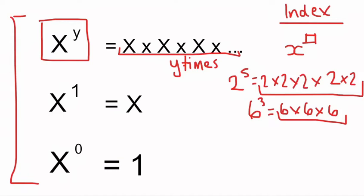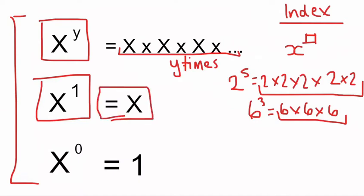The second index law is x to the power of 1 — any number put to the power of 1 is just that number, so it's equal to x. For example, 100 to the power of 1 is 100, and 10 to the power of 1 is 10, because it's just that number one time.